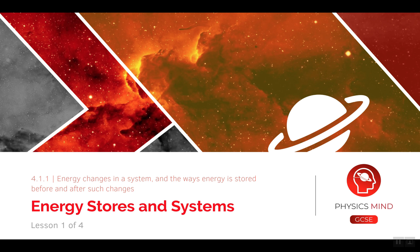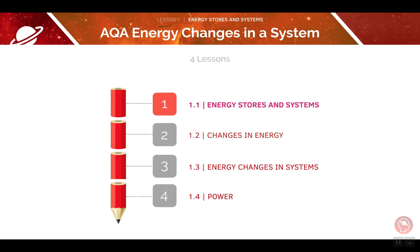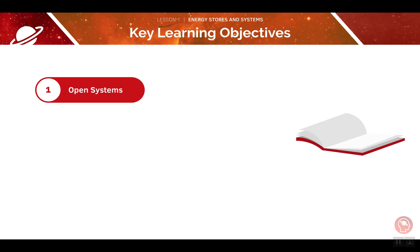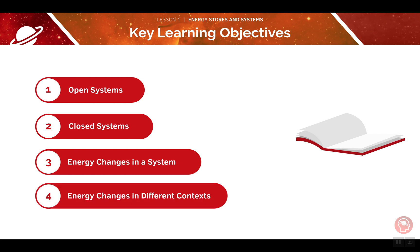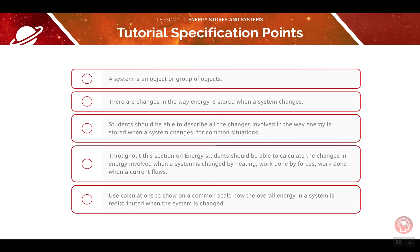Welcome to lesson 1 of 4 in this tutorial on Energy Stores and Systems. We'll be covering three other lessons in this tutorial, but firstly we'll look at specification point 1.1. In this tutorial, we will be covering open systems, closed systems, the energy changes within them, and energy changes in different contexts. Here's a list of specification points we'll be covering in this section — pause the video now and read through them carefully before we begin.